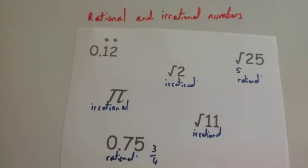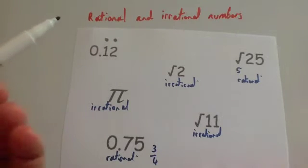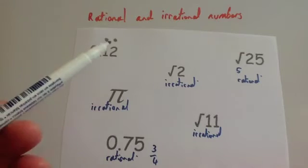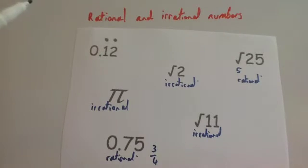0.12 recurring. On the other hand, some people may think it's irrational because it goes on forever. However, it has a recurring pattern: 1, 2, 1, 2, 1, 2.